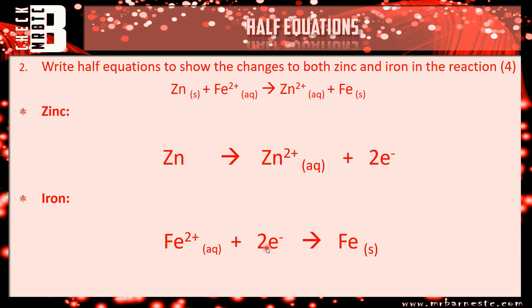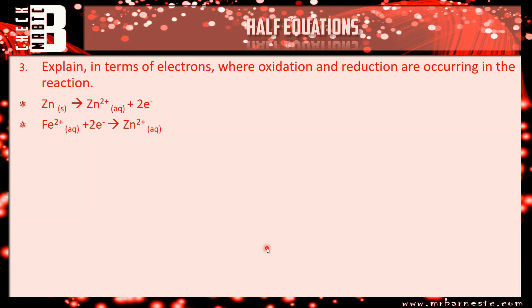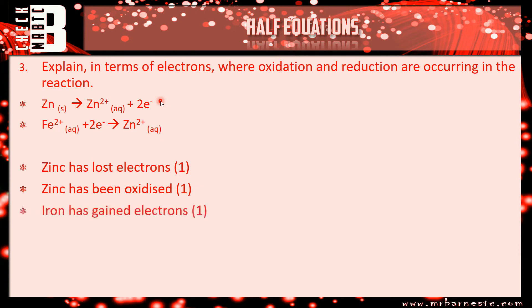So following on again from that, question three: explain in terms of electrons where oxidation and reduction are occurring. Zinc has gone to Zn2+ by losing electrons. So you say zinc has lost electrons. Remember OIL RIG: oxidation is loss, reduction is gain. So zinc has been oxidized because it's lost electrons. Iron is the opposite. It has gained electrons and therefore it has been reduced.